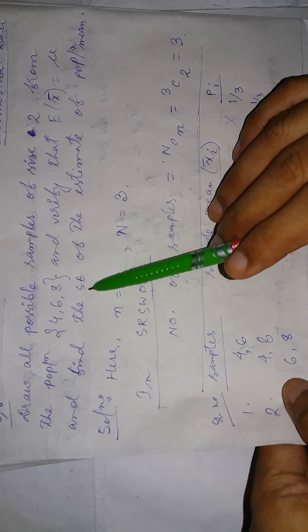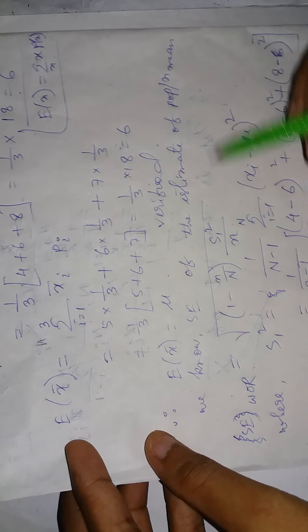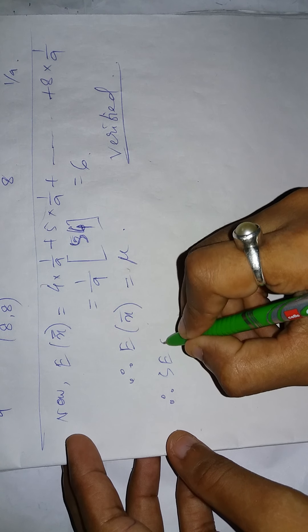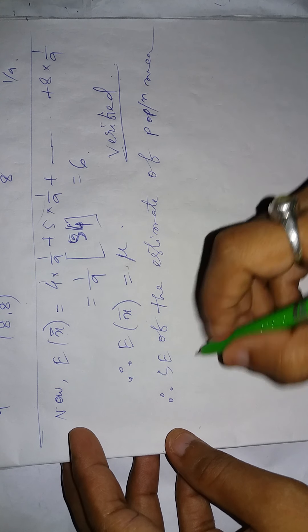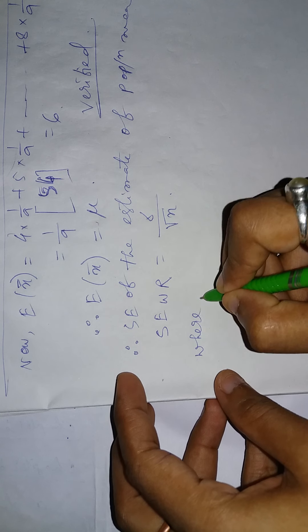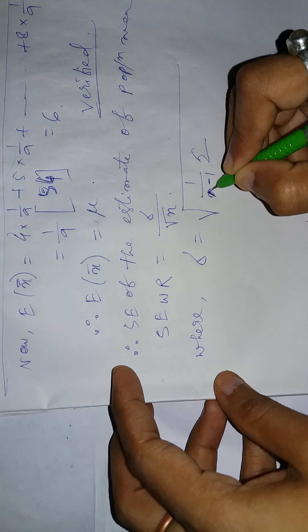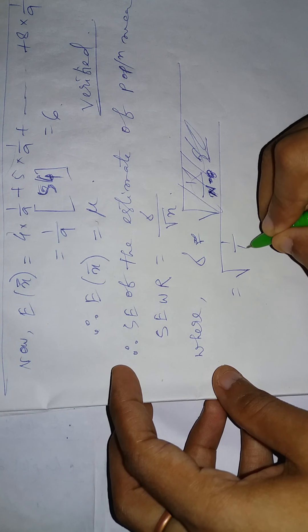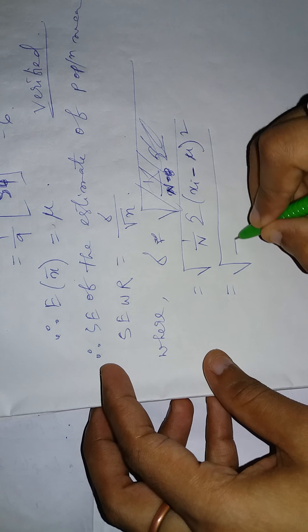Next step is to calculate the standard error of the estimate of population mean in case of simple random sampling with replacement. The formula for standard error with replacement is sigma by root n. For sigma, we use the formula: sigma equals square root of 1 by N times sum of (xᵢ minus μ) squared.